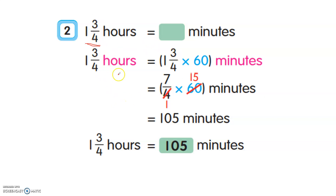This method is shown in your textbook. First, convert 1 and 3 over 4 into an improper fraction: 4 times 1 equals 4, plus 3 gives 7 over 4. Then 7 over 4 times 60, and do cross multiplication — divide by 4: 60 divided by 4 equals 15. So 7 times 15 equals 105 minutes.